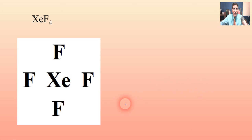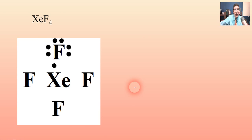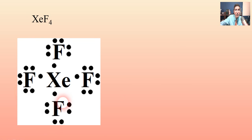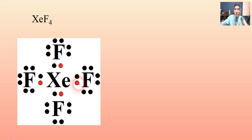Let's try xenon tetrafluoride as a good example of an exception to the octet rule. We'll stick xenon in the middle with four fluorines around it. Every fluorine has seven dots according to the periodic table, so that's 28 dots total for the fluorines. Xenon is a noble gas so it has eight, but after placing four of those eight electrons we're already out of room — there's no other place to put them.